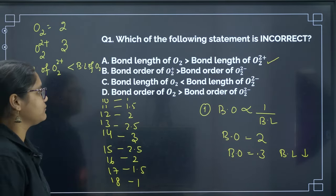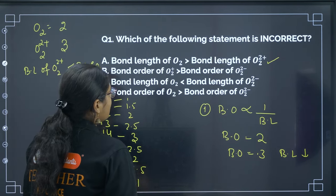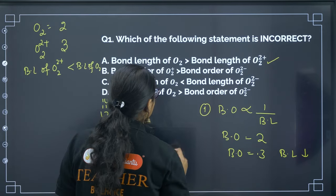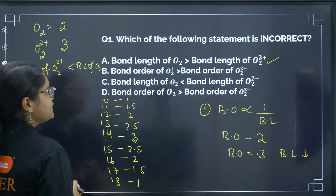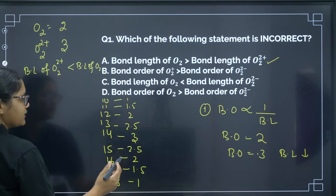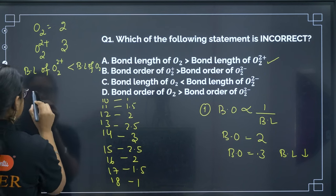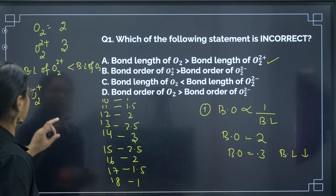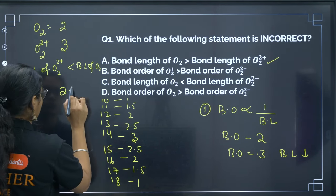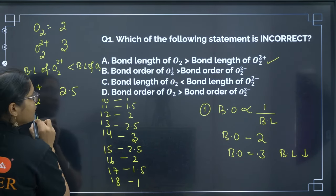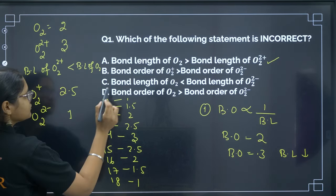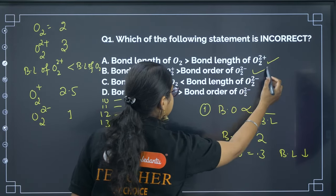Next, comparing bond order of O2⁺ and O2²⁻. O2 has 16 electrons; O2⁺ has 16 − 1 = 15 electrons, giving bond order 2.5. O2²⁻ has 16 + 2 = 18 electrons, giving bond order 1. So bond order of O2⁺ (2.5) is greater than bond order of O2²⁻ (1) — that statement is correct. Then the statement about bond length of O2 vs O2²⁻: O2 has bond order 2 and O2²⁻ has bond order 1, so bond length of O2 will be less than O2²⁻ — this statement is also correct.